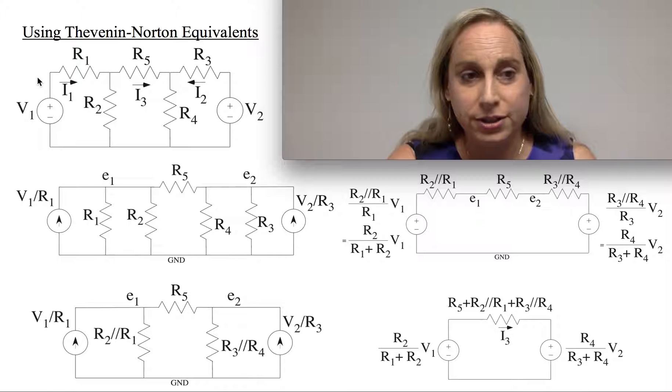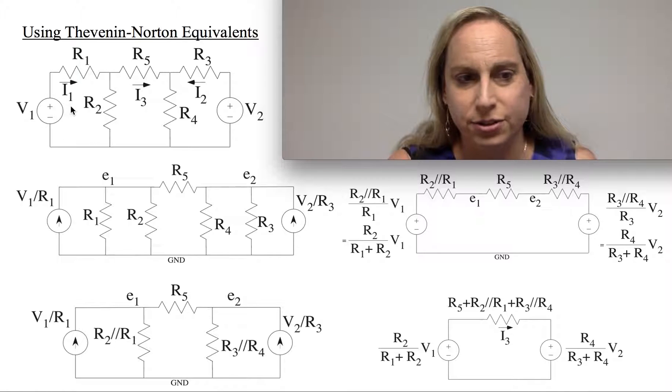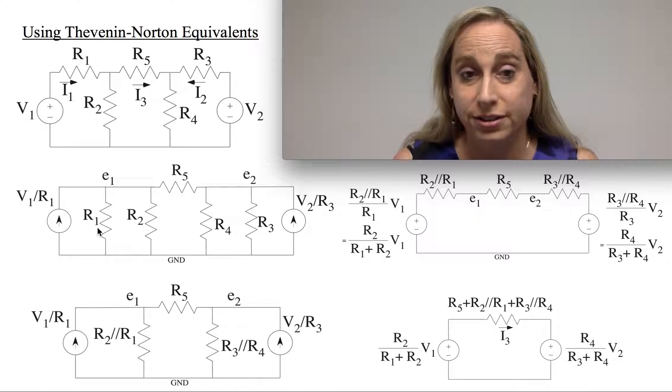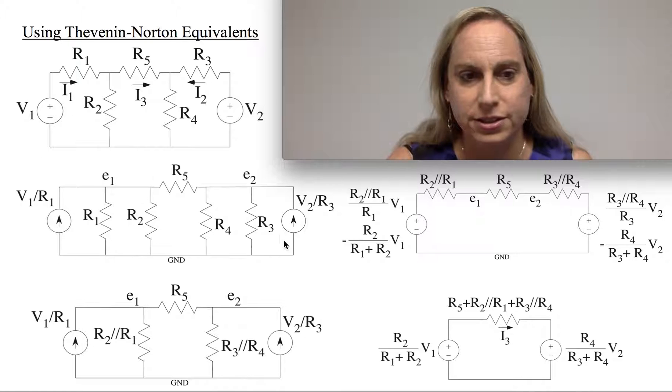All right. So how to do that? Well, it turns out I can take these two, and taking the Thevenin and Norton equivalents, I can make a current source and a resistor in parallel from these two elements in series. The same thing is true with the ones on the other side.